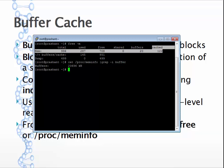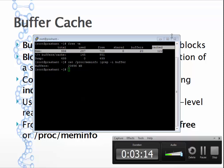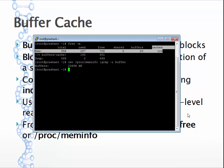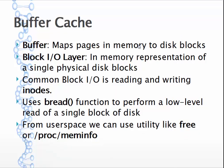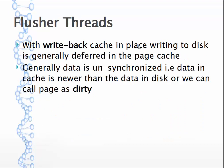Here you can see the amount of buffer cache - it's about 20 MB in buffer. By default, Linux uses write-back cache, meaning write operations are deferred in the page cache. When an application makes some pages dirty, it doesn't directly write all the pages to disk at the same time - it defers the entire operation and then starts pushing those pages to disk.